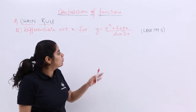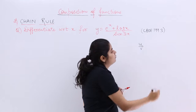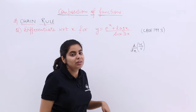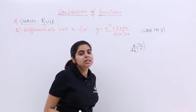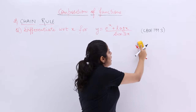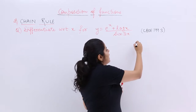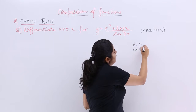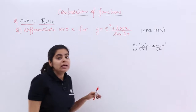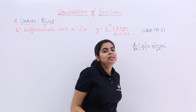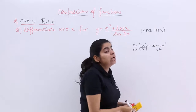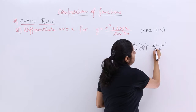Let me write down the quotient rule. If there are two functions u and v, and you have to find the derivative with respect to x of u upon v, where u and v are functions of x, then d/dx of (u/v) is u'v minus uv' whole upon v squared. Here u is the numerator and v is the denominator.